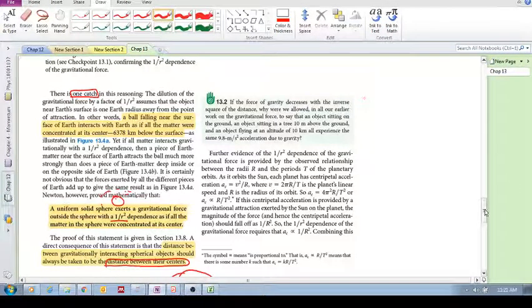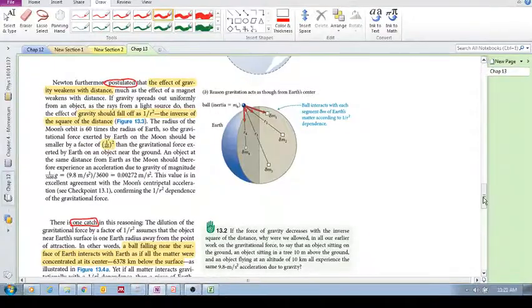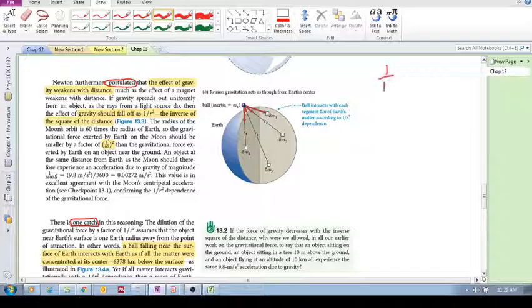Okay, so in the previous video we saw that the gravitational intensity falls off by this factor, 1 over r squared. So if we've got Earth...